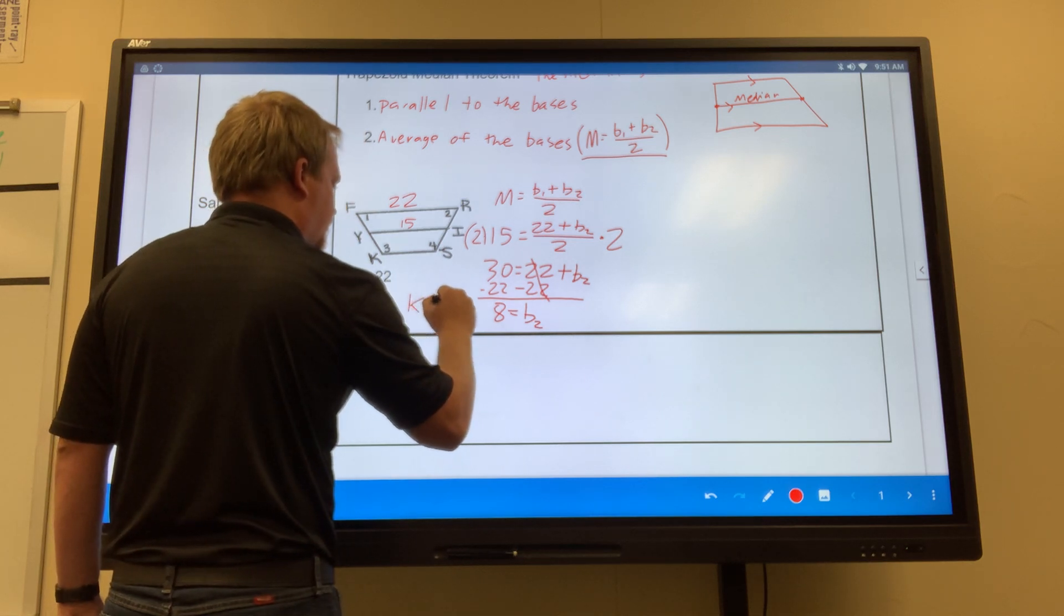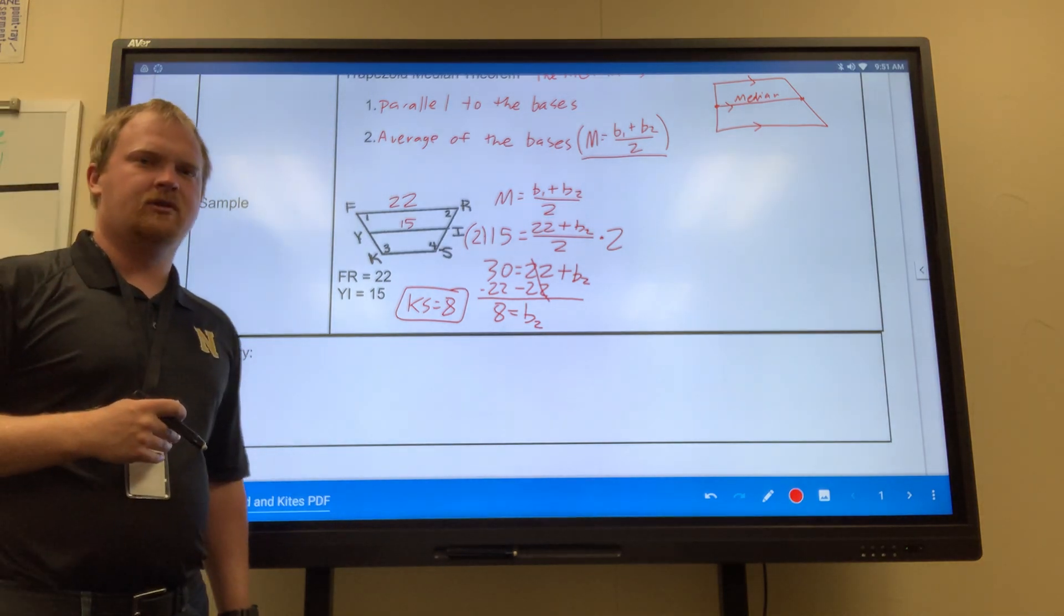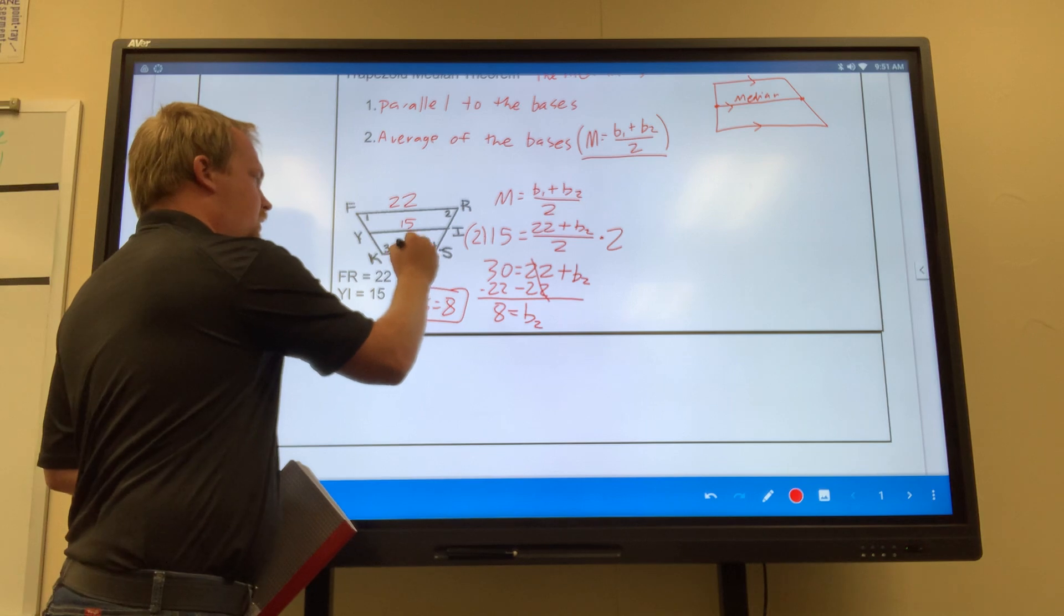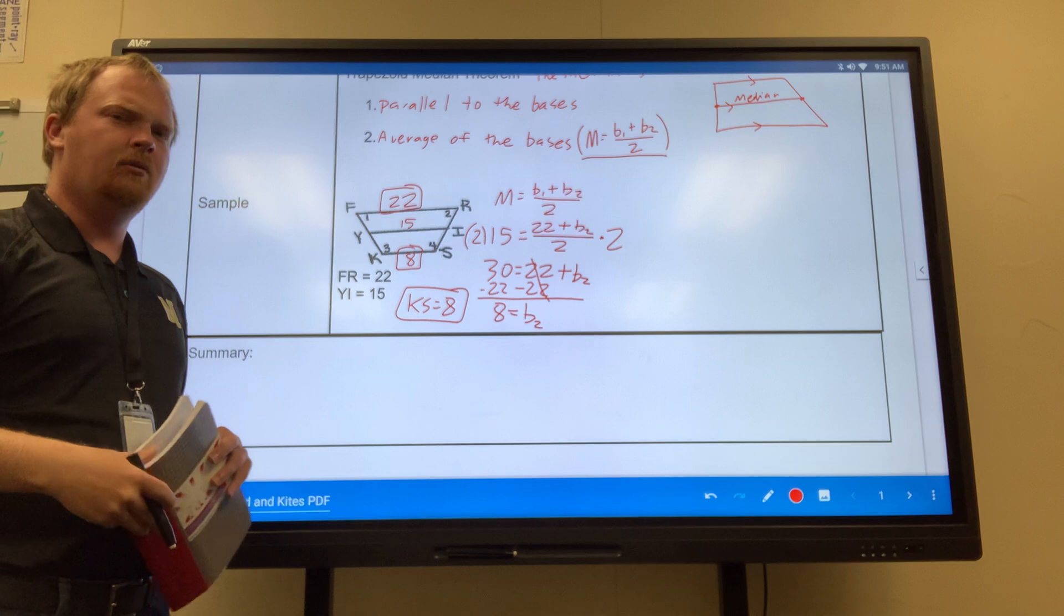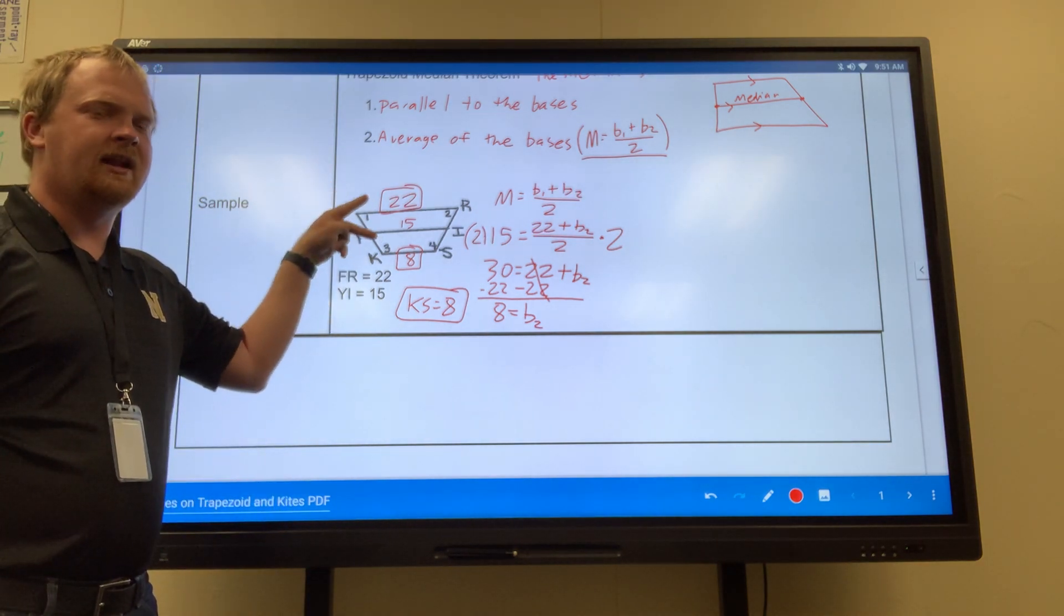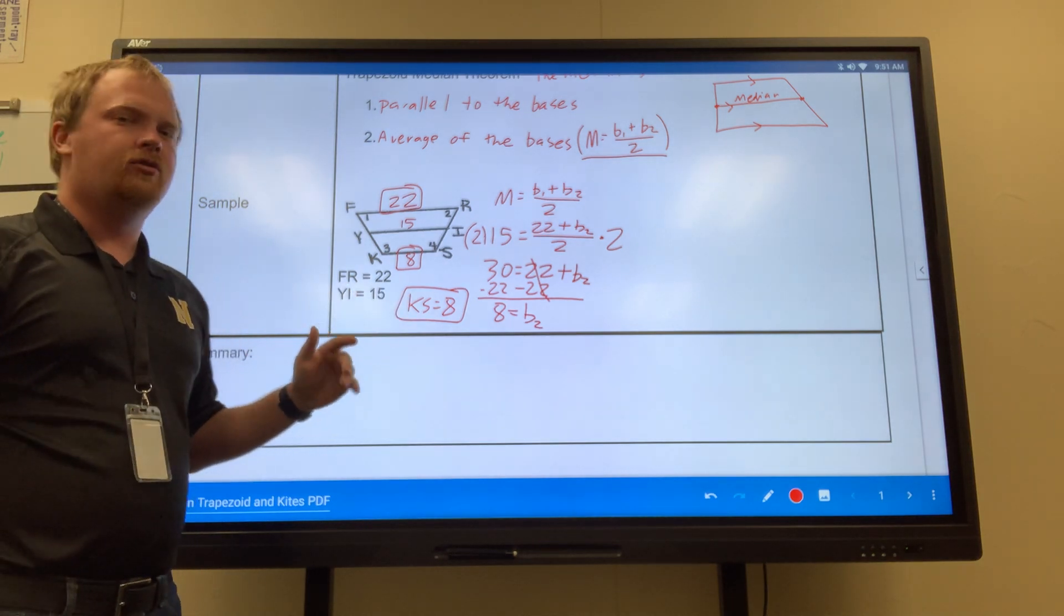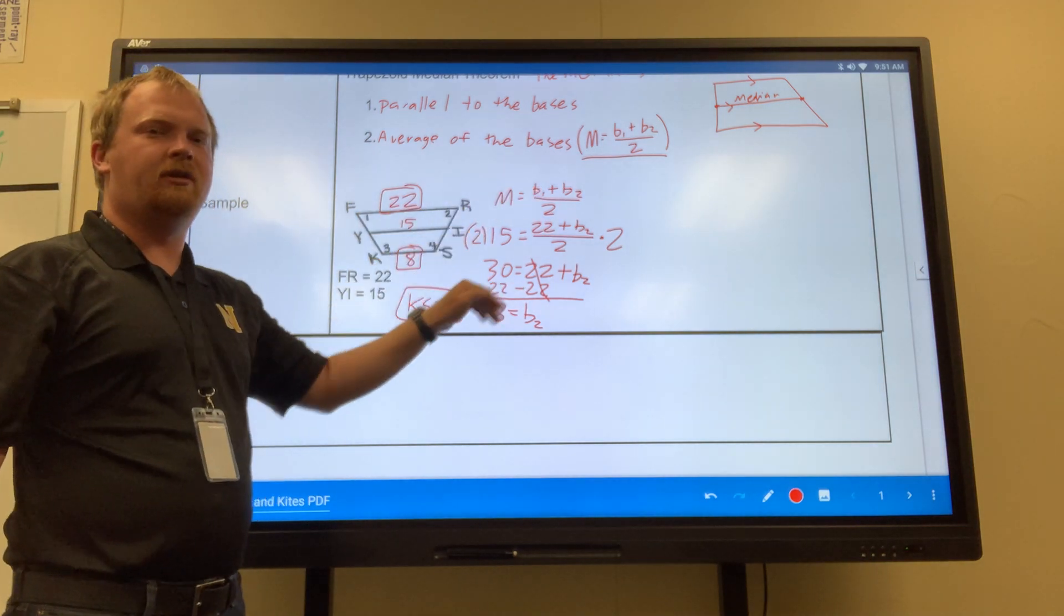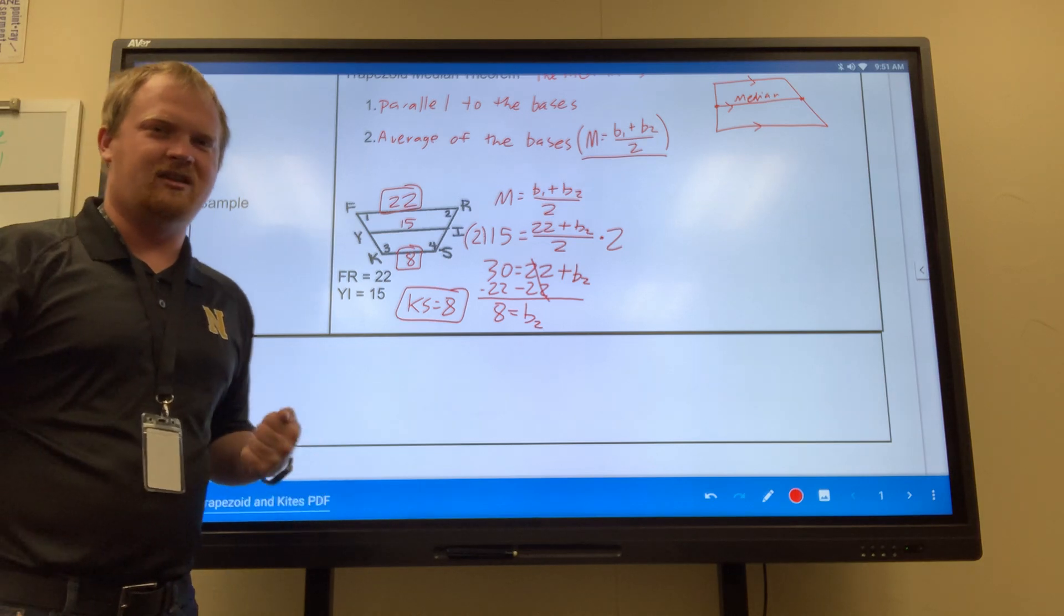So my second base is 8. So that's what KS is. KS is 8. But even if we're given these two right here, all we have to do is take the average of those two, which means we're adding them, then divide by 2, and that gives us our median. So even if we have the median, if we work with this formula right here, we should be able to find the second base. Thank you, and have a good day.